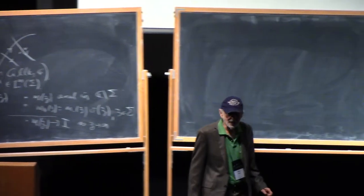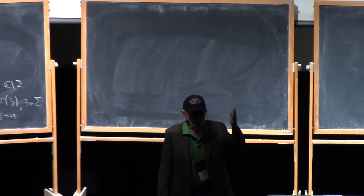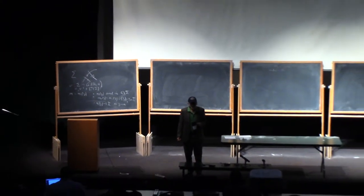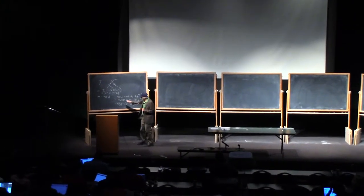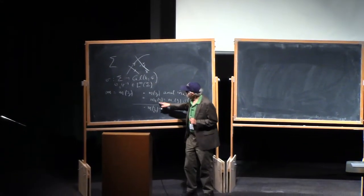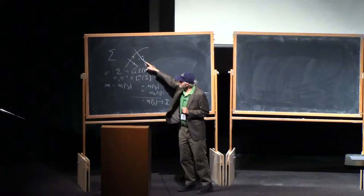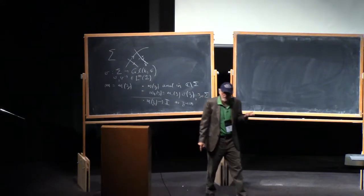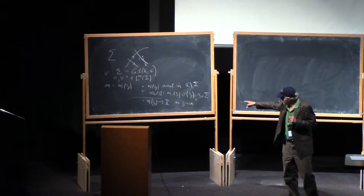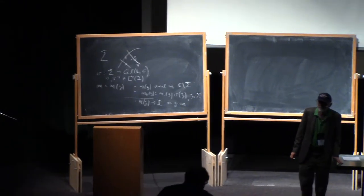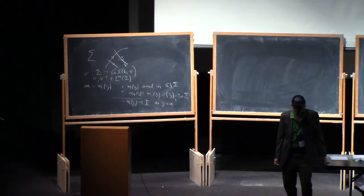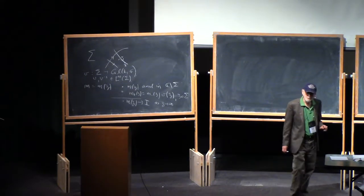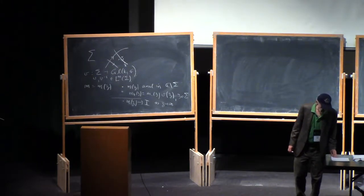There are many technical issues connected with a Riemann-Hilbert problem. I wrote down a list of nine or ten of them. The most obvious one is what you mean by m-plus and m-minus. m-plus of z is the boundary value of m as you approach z from the plus side; m-minus is the boundary value from the left. In what sense are those limits taken? How do you know that a solution exists? Is the solution unique? What kind of contours do you consider? I'm not going to address this systematically — we'll just face the issues as they come up.